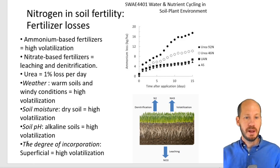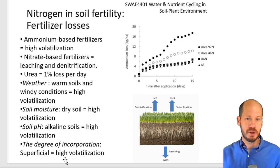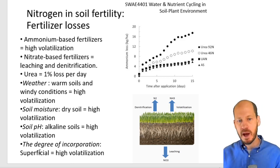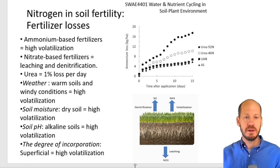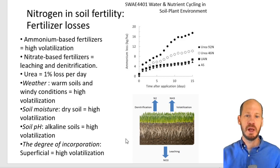The incorporation of these fertilizers is also important. Nitrogen is normally applied on the surface, but the more superficial the application, the higher the volatilization. What you want to do is use slow-release nitrogen fertilizers in order to avoid building up high concentrations of ammonium in the soil and avoid creating the potential for volatilization.